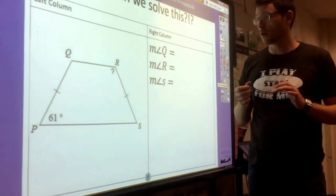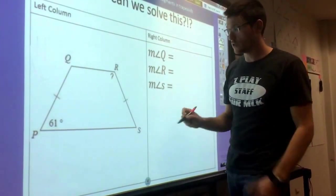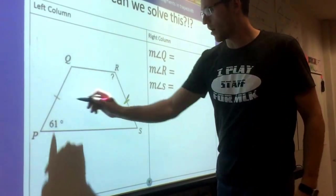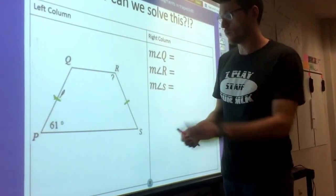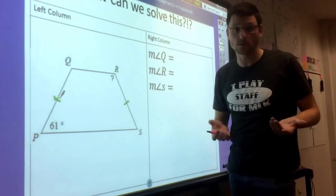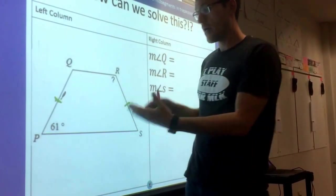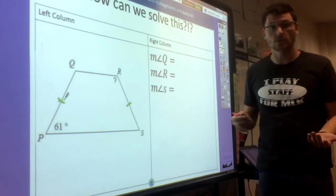All right guys, so the next shape we're going to talk about is still a trapezoid. But the thing that's changed here is you'll notice we have a little mark on each side here, and we have two sides that are the same. So this is called an isosceles trapezoid. Just like our isosceles triangle had two sides that were the same, our isosceles trapezoid has two sides as well.